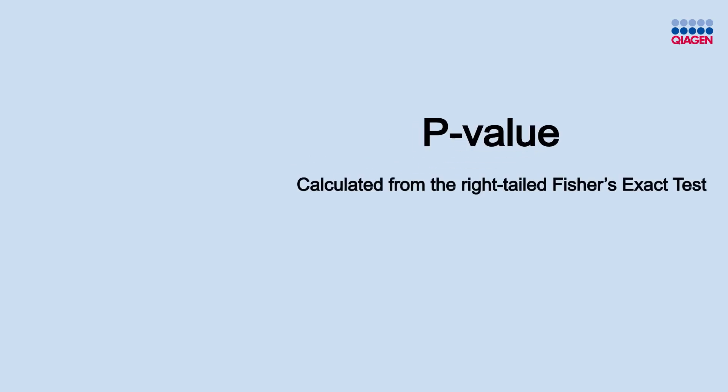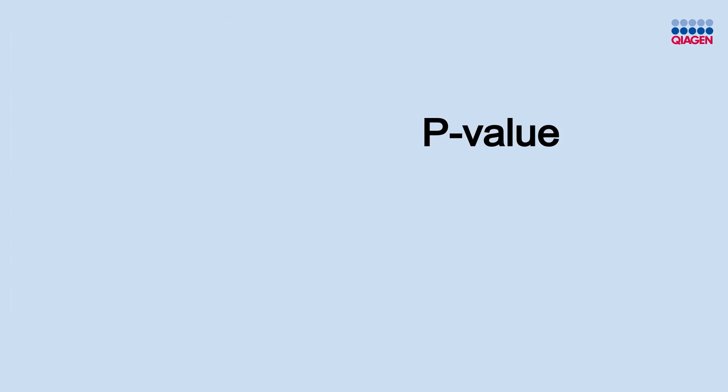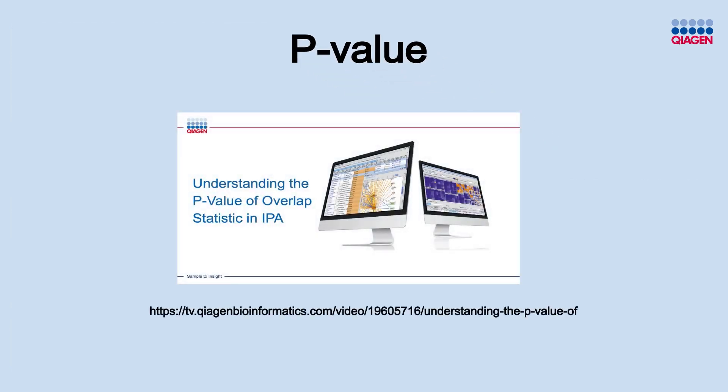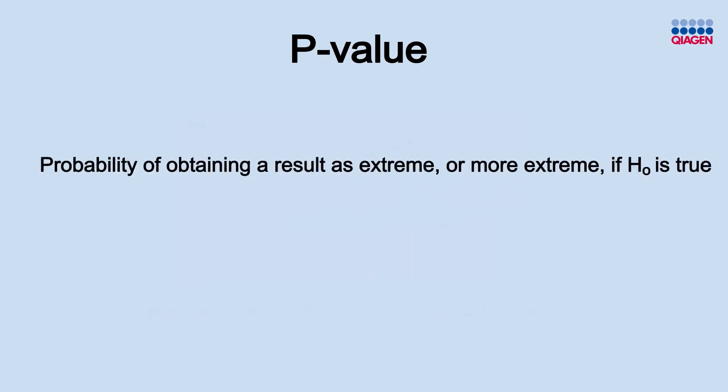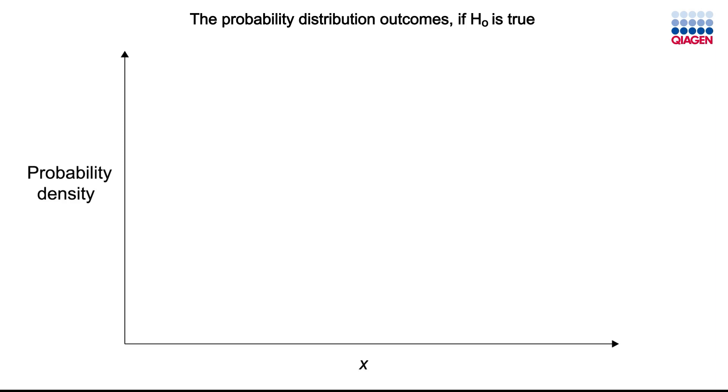IPA uses the right-tailed Fisher's exact test to determine which biological entities are significantly enriched in your dataset. We described the p-value in more detail in a previous video, but briefly, the p-value is the probability of observing a result as extreme or more extreme than the result you obtained, if the null hypothesis is true. You make the judgment about whether you can reject the null hypothesis by comparing the p-value to a predefined significance level, also known as alpha. A result with a p-value less than alpha is considered to be statistically significant.